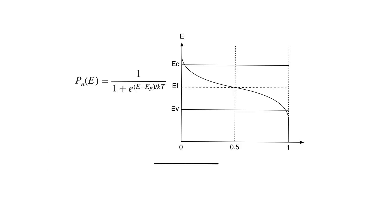To start calculating quantitative models for the number of electrons and holes in a semiconductor, we have to start with something called the Fermi-Dirac function. The Fermi-Dirac function is shown here. This is a probability density function, so it represents the probability of finding an electron at a certain energy level.